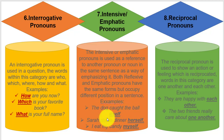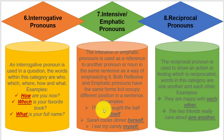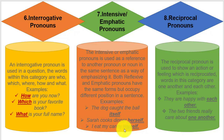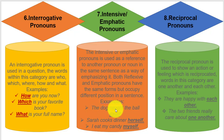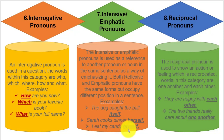For example: 'The dog caught the ball itself.' The word 'itself' can also be placed right after the subject: 'The dog itself caught the ball.' Similarly: 'Sarah cooks dinner herself' or 'Sarah herself cooks the dinner.' Emphatic pronouns emphasize the doer of the action — the dog itself, Sarah herself, I myself. They can be placed immediately after the subject.